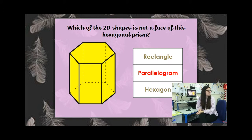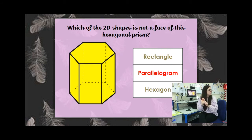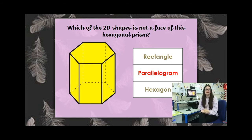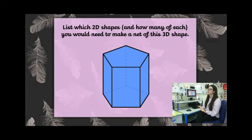The parallelogram is not a face of that 3D shape. So if you had a net with rectangles and hexagons you could think about whether that would make it, but if your net had a random parallelogram that would not make a hexagonal prism. Understanding what the faces look like is really going to help you decide which nets would work and which wouldn't.